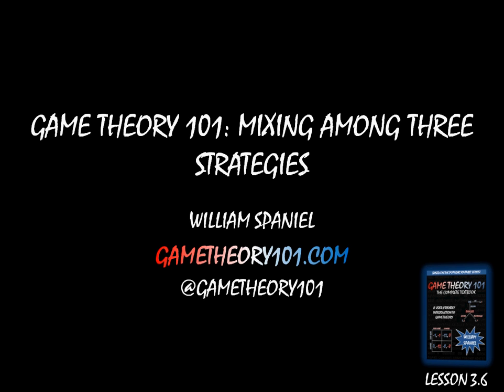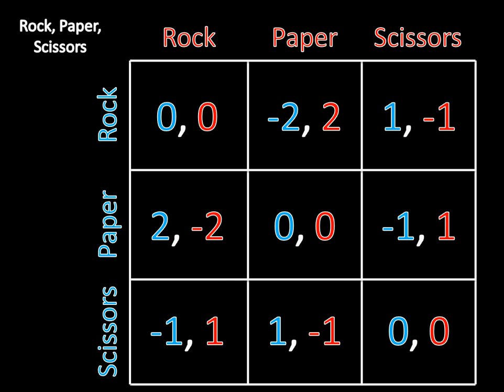If you remember back a few videos ago, we first introduced this idea of a modified rock-paper-scissors game. Two videos ago, we talked about a neat little theorem that helps us solve symmetric zero-sum games just like this one. In the last video, we showed that there can't be any pure strategy Nash Equilibria or any mixed strategy Nash Equilibria in which one player mixes between just two strategies.